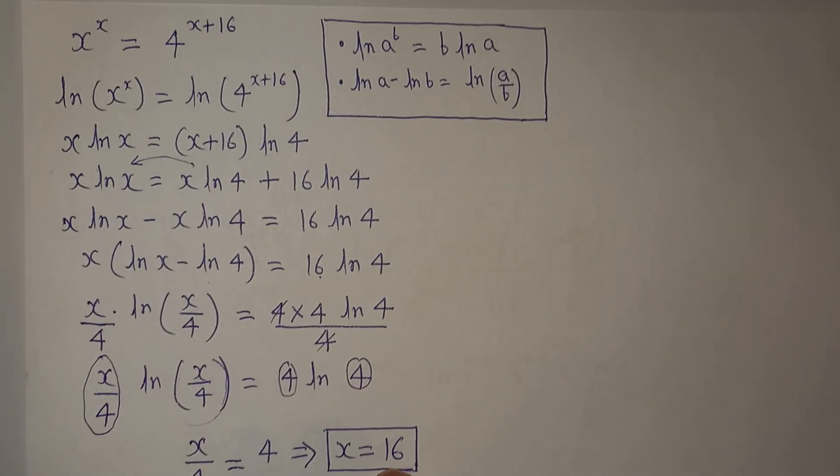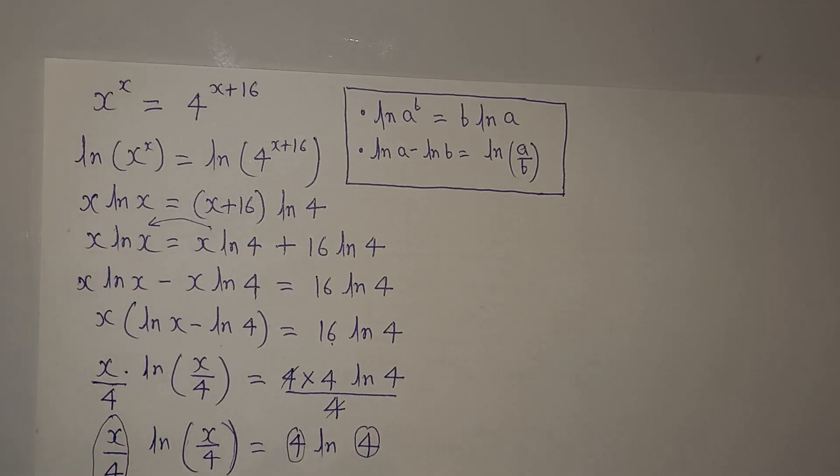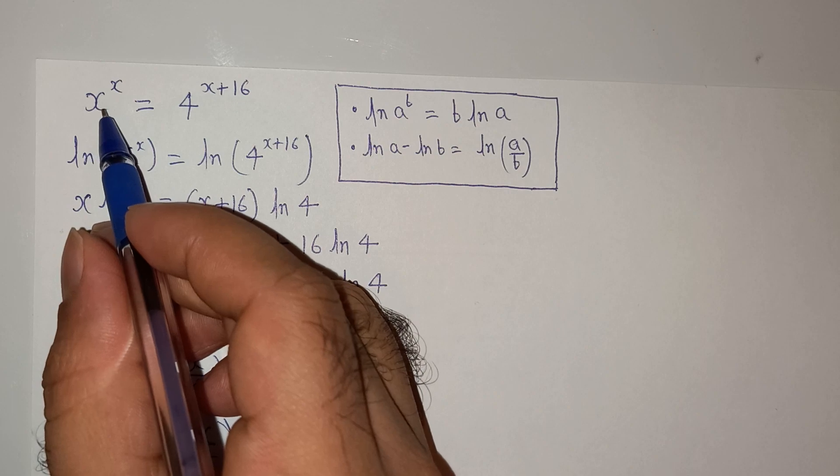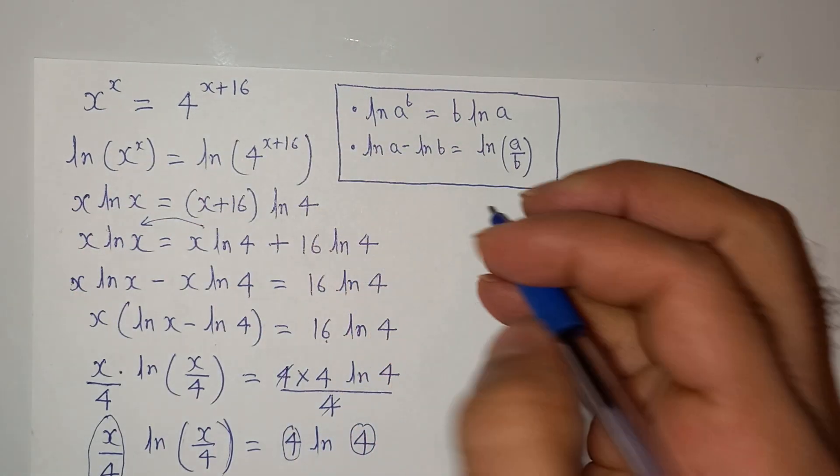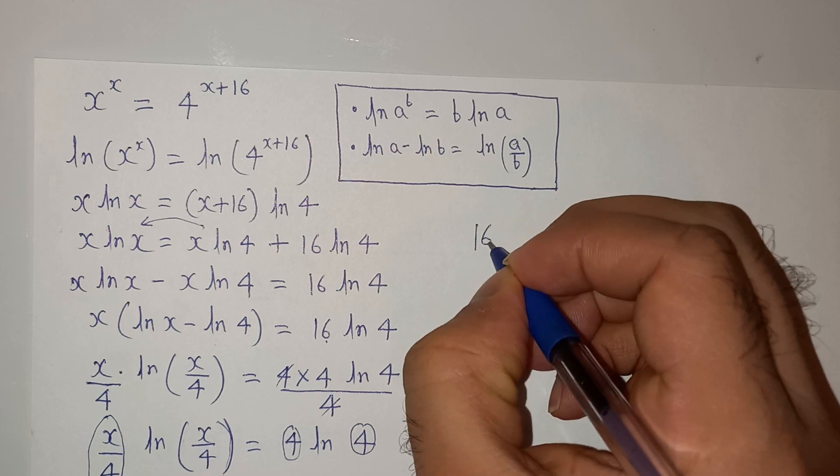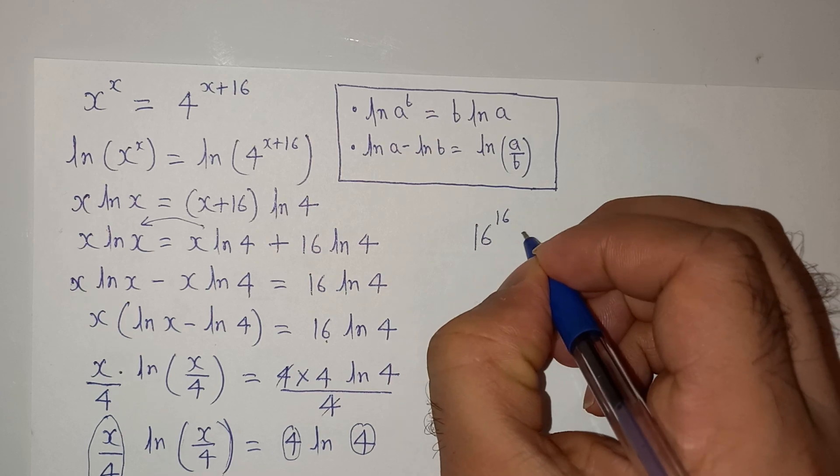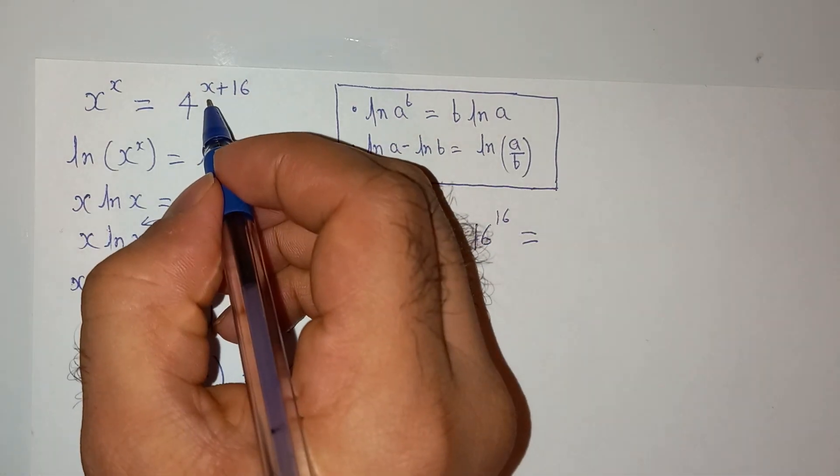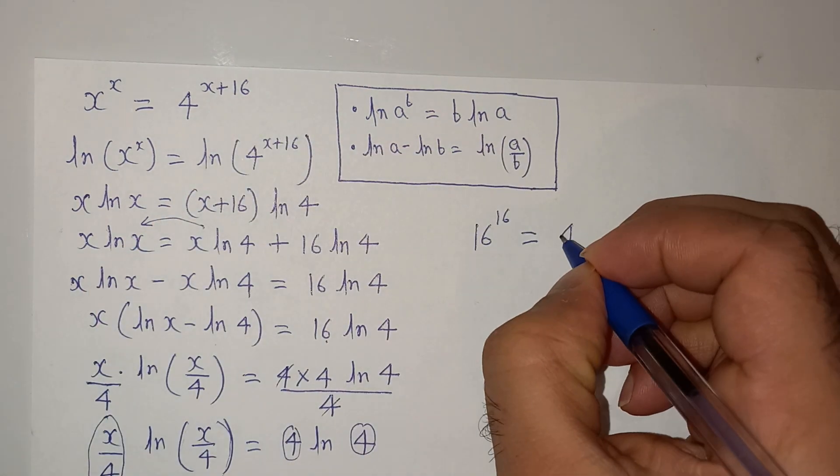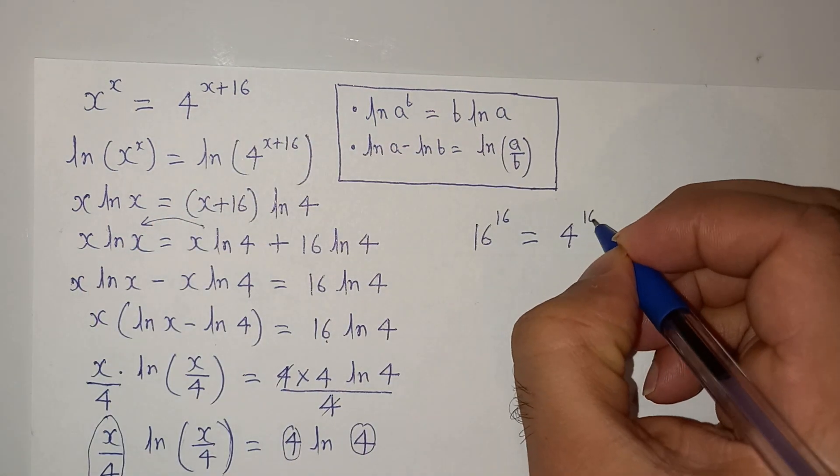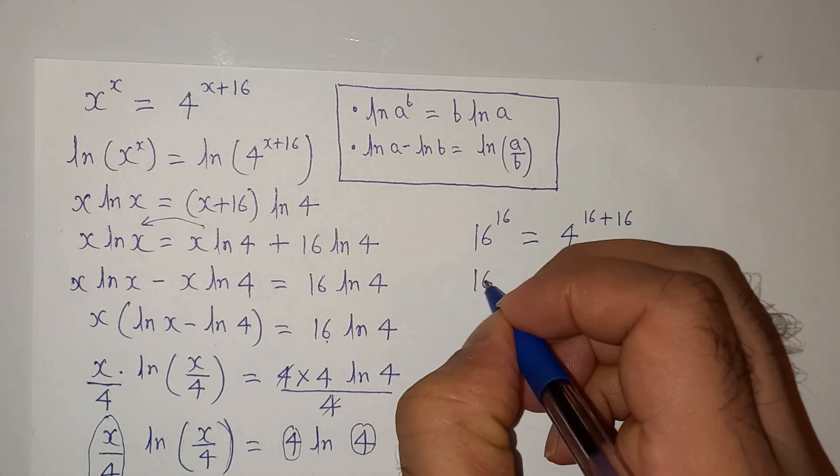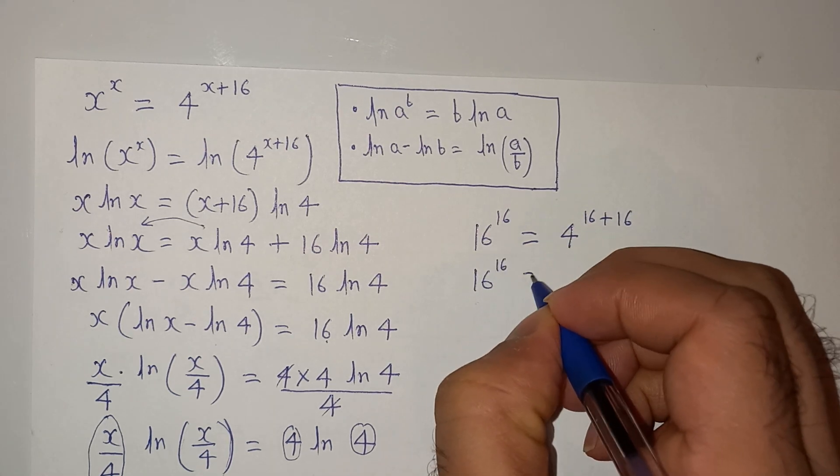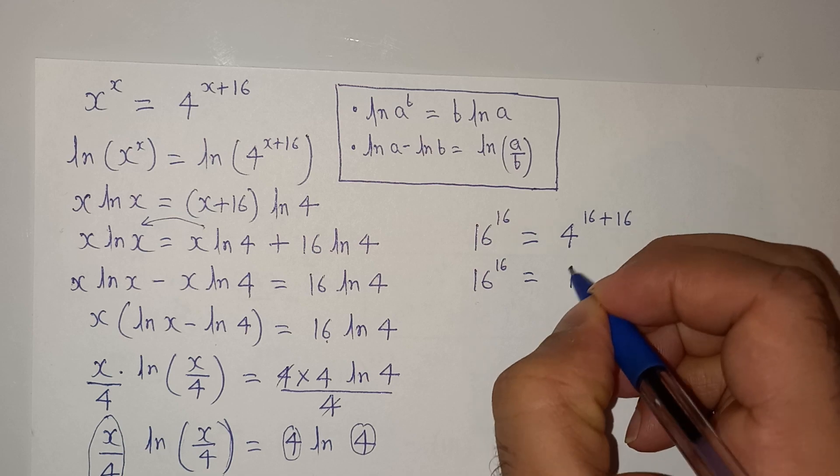So the original equation is x power x. The value of x as per answer is 16, so 16 power 16 should be equal to 4 power 16 plus 16. So we can write this as 16 power 16 equals to now this will be 4 power 32.